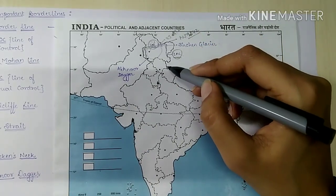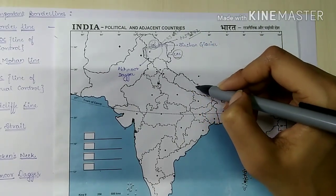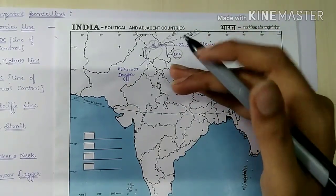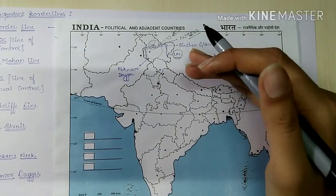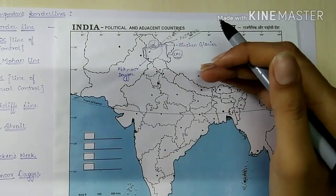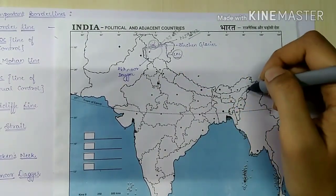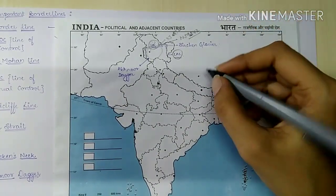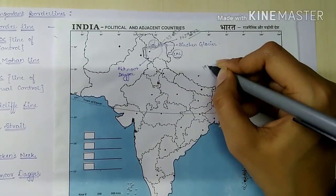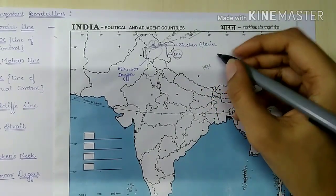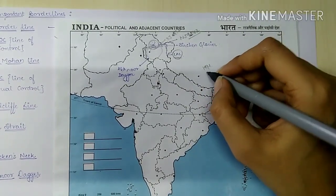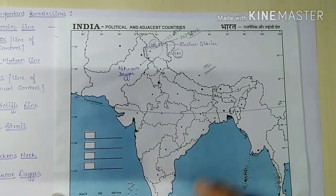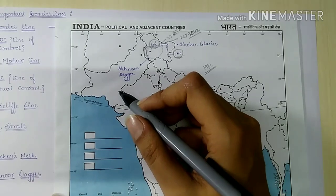The McMahon Line is between India and China — specifically between the Tibetan region of China and the northeastern region of India. It was proposed by Henry McMahon and was formed in 1914 during the Shimla Convention.